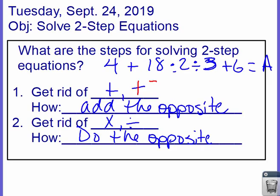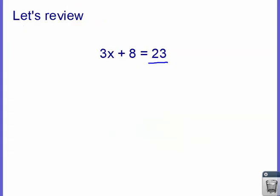So in order to solve equations, the last thing that we did in an order of operations problem is the first thing I undo in an equation. The last thing was the add-subtract, and the thing right before that was the multiply-divide. So we undo things in reverse order of operations. That's what we're doing today — how do we solve these equations?